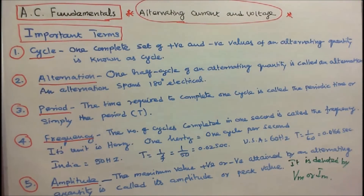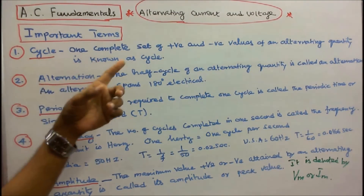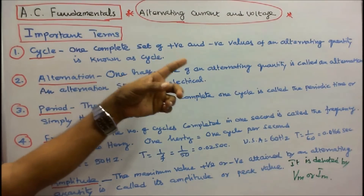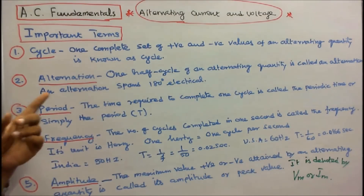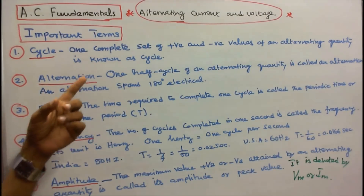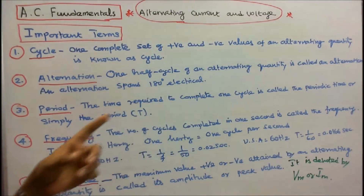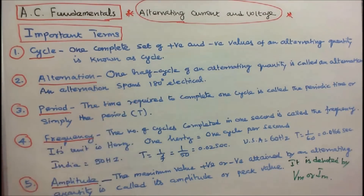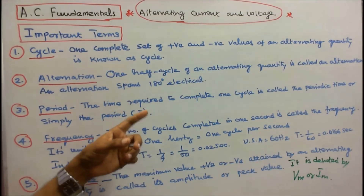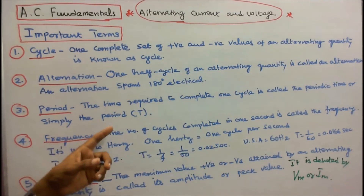Important Terms. Number 1 — Cycle: one complete set of positive and negative values of an alternating quantity is known as a cycle. Number 2 — Alternation: one half cycle of an alternating quantity is called an alternation. An alternation spans 180 degrees electrical. Number 3 — Period: the time required to complete one cycle is called the periodic time, or simply the period, capital T.